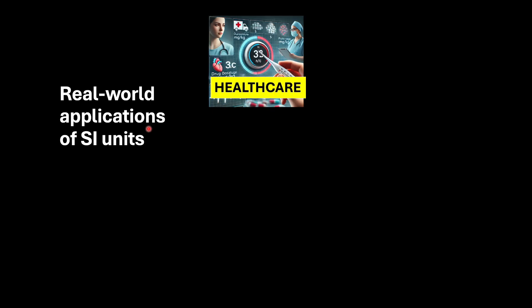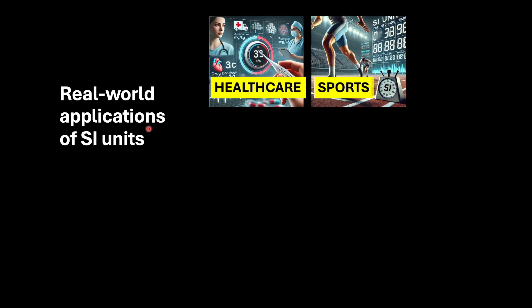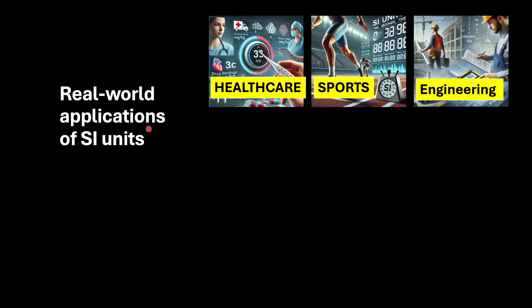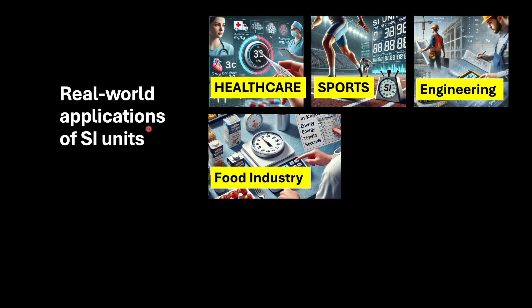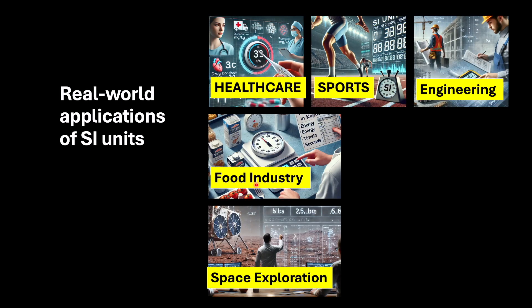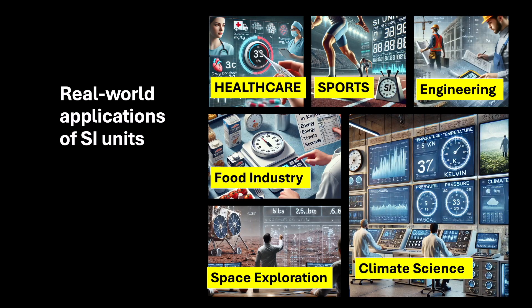Now that we understand the importance of standardization, let's talk about some real-world applications of SI units. In healthcare, a little dosage change can be fatal. In sports, a difference of a fraction of a second can switch medals in the Olympics. In engineering and construction, a small difference in measurement can lead to the collapse of an entire bridge. In the food industry, all physical quantities matter — the mass of ingredients, cooking time, etc. In space exploration, NASA's Mars Climate Orbiter crashed due to unit mismatch, leading to loss of millions of dollars. In climate science, every small difference in temperature measurement can be very crucial.